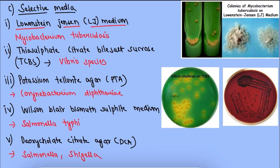Now coming to selective media: we have Lowenstein-Jensen medium, which is used for Mycobacterium tuberculosis — we get rough, tough, buff colonies here. The second is TCBS (thiosulphate citrate bile salt sucrose), used for isolation of Vibrio species. The third is potassium tellurite agar, used for isolation of Corynebacterium diphtheriae — we get black colonies here, as seen in the image.